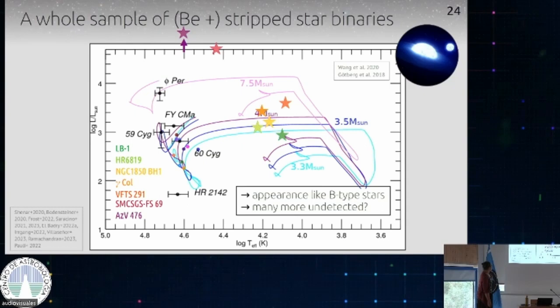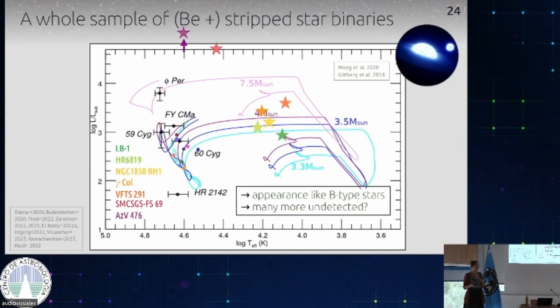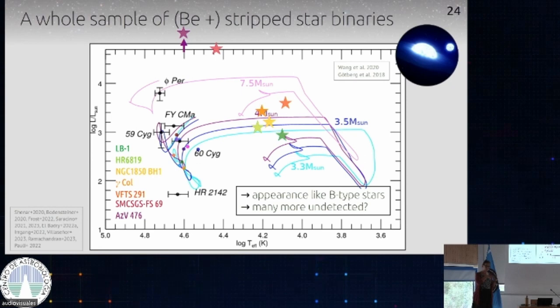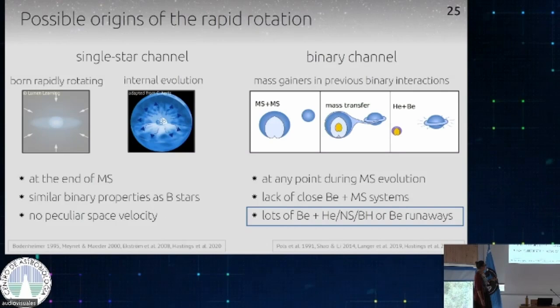This also explains why they look like B-type stars in the phase we observe them — they sit in a part of the HR diagram also occupied by single main sequence stars. So you could easily mistake them for B-type stars, which means probably a lot of the other systems we know where we think there is a B star in a binary could be these kinds of systems. One particular thing we noticed is that the stripped stars are very slowly rotating. So basically, a lot of the BE stars we know have subdwarf companions, compact companions, or are runaways — exactly the prediction of the binary channel.